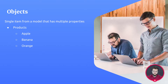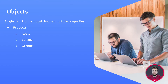An object is a single item from a model that has multiple properties. Think about a product. When you create a model called products, it needs to hold these product objects. If we're into fruit, then these objects could be an apple, a banana, or an orange. And these objects will have properties, like a name, a price, a species, a color, to differentiate them from one another.